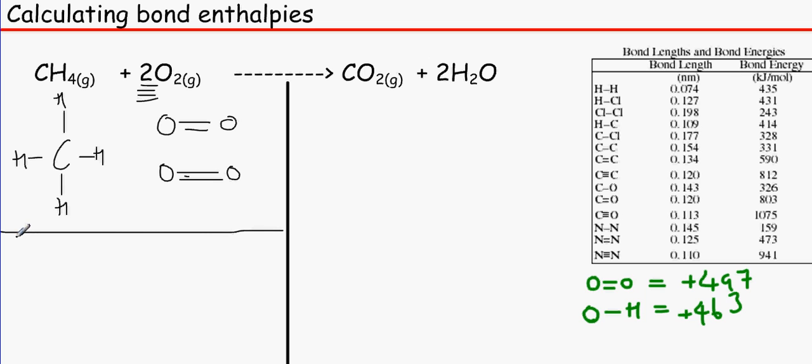Now, we can see we have got C to H bonds here. And we've got four of them. One, two, three, four. So we need to have a look at the data, which is C to H, which is plus 414. And we need to multiply that by four.